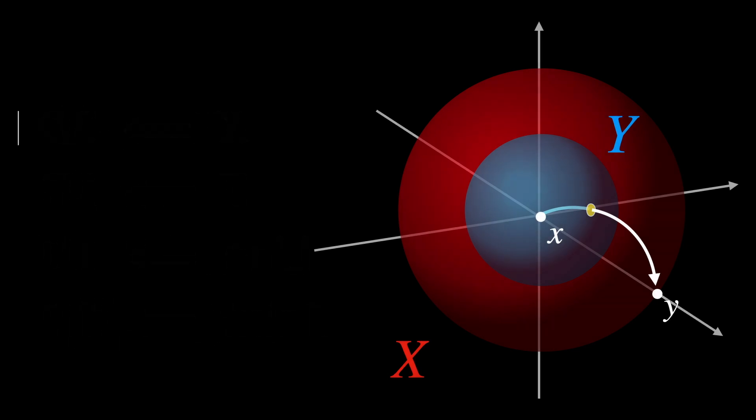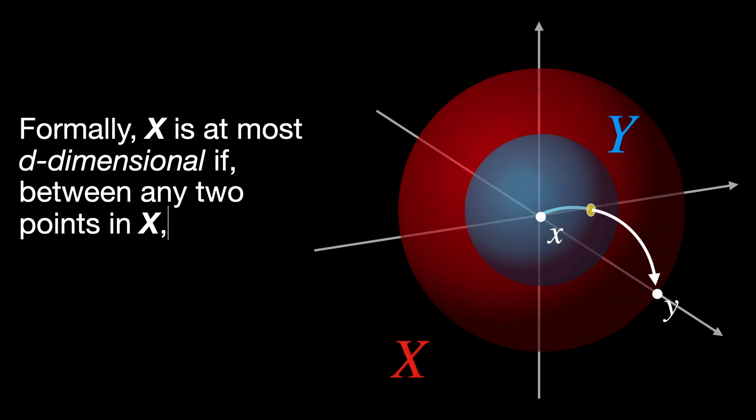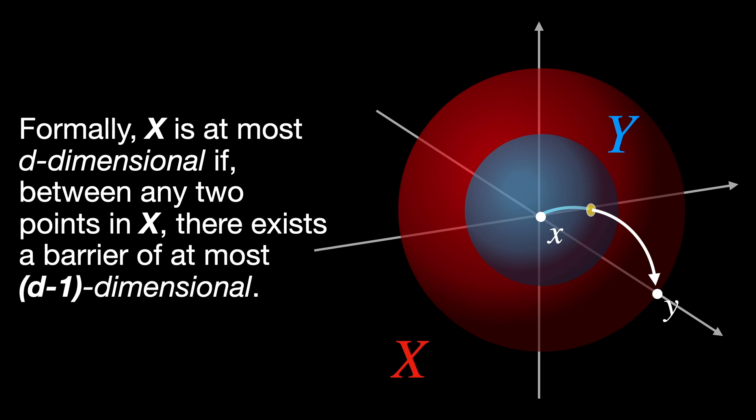Formally, X is at most D-dimensional if between any two points in X, there exists a barrier of at most D-1 dimensional.